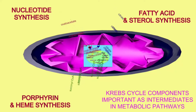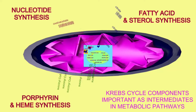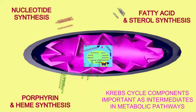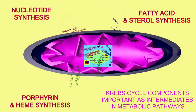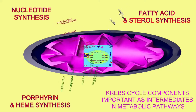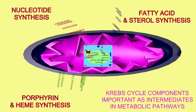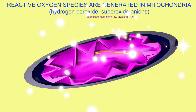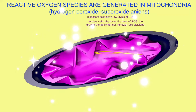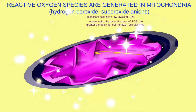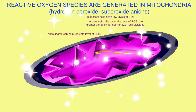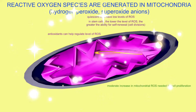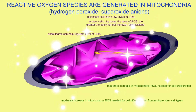For example, there are many metabolites which are produced in mitochondria which serve in biosynthetic pathways. There are signals like reactive oxygen species which are important in regulating events in the cell.